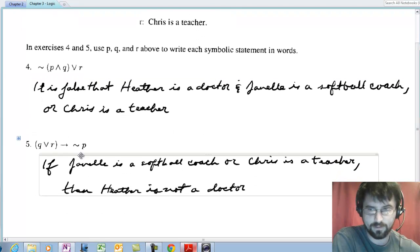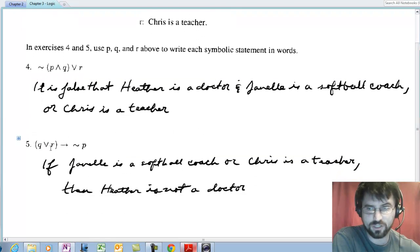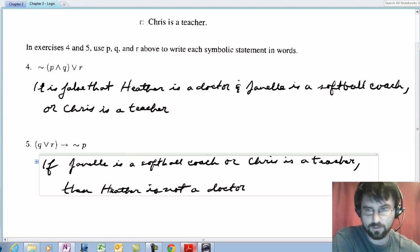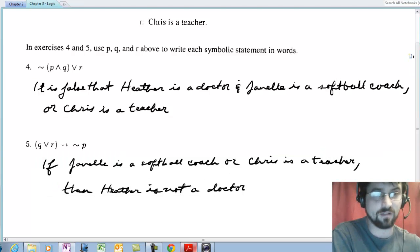Down below, if. Now the disjunction is the antecedent and the negation here is the consequence. So Janelle is a softball coach or Chris is a teacher. I group those before the then and I put a comma. The comma isn't super necessary because we know between the if and the then is the antecedent. So I know I'm taking all this as the antecedent and Heather is not a doctor as the consequence.